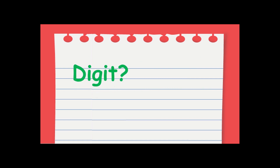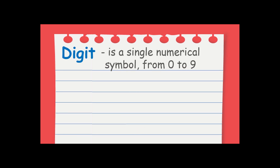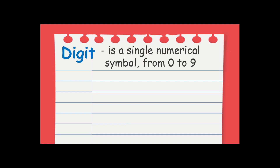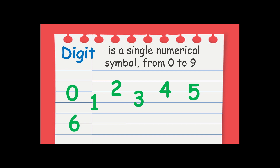First, what is the difference between digit and number? When we say digit, it is a single numerical symbol from 0 to 9. So these are the single numerical symbols: 0, 1, 2, 3, 4, 5, 6, 7, 8, and 9. These are called digits, or they are also called numerals — the symbols you see on your screen.